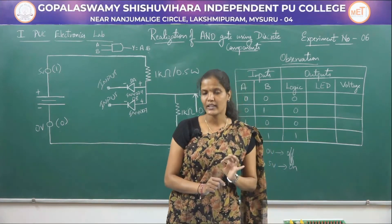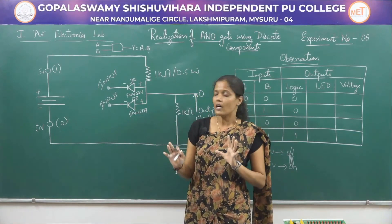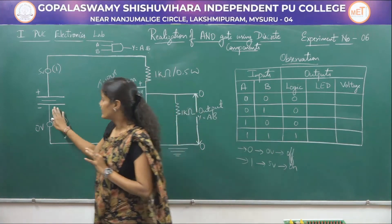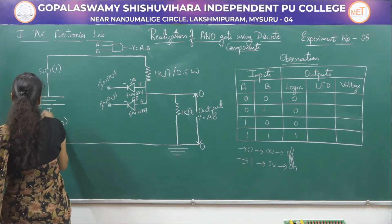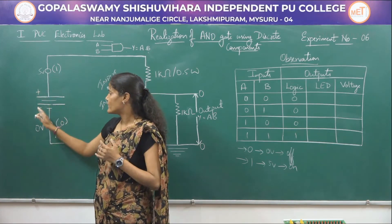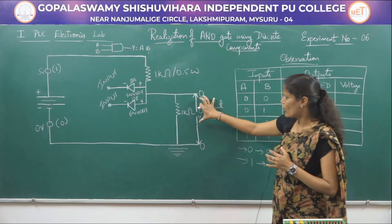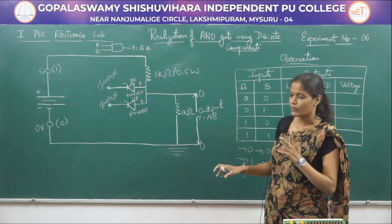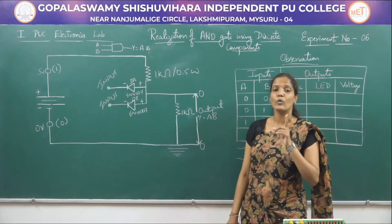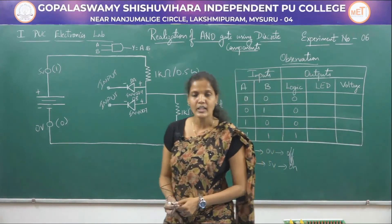Let us begin with the circuit connection of this experiment where we are having a ready board. We will be connecting a voltage source of plus 5 volts. This is the positive terminal and this is the negative terminal. For the output, we are having two responses: one is the LED response, and we will also be connecting a voltmeter across this resistor in order to find out the voltage.